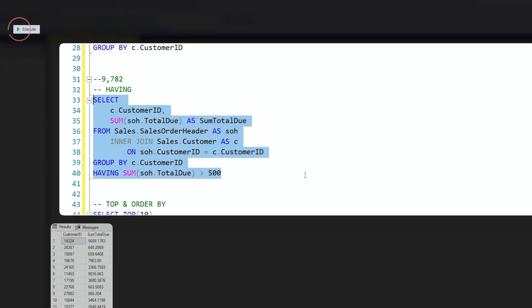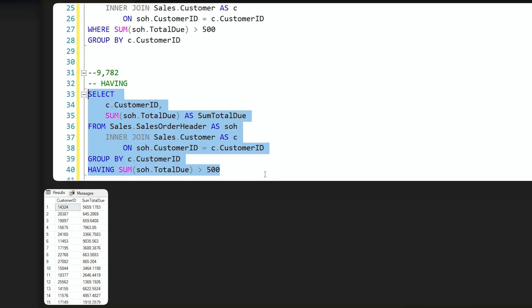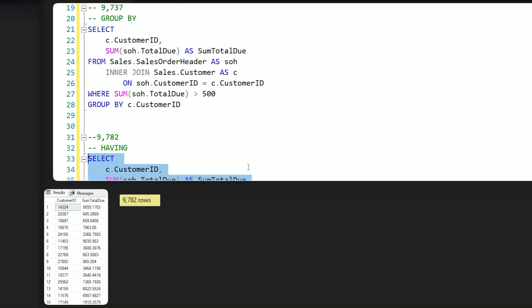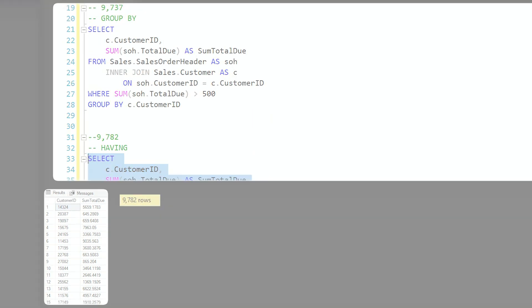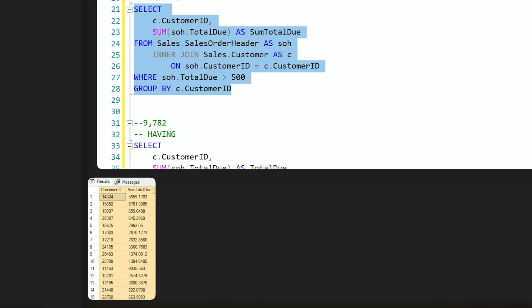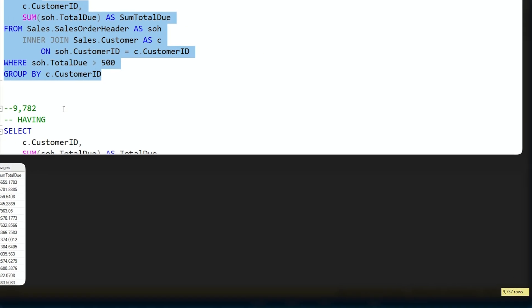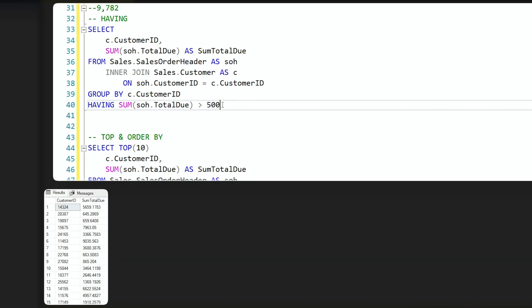Why might that be the case? Well, if I highlight this query and execute it, you'll see I have a slightly different amount of rows. I have 9,782 and you can compare that to when we use the WHERE clause, I have 9,737. Well, the reason there's a difference is instead of filtering on the data before the aggregation was completed, we are now waiting for the aggregation to be taken care of and then we will filter the data afterwards.